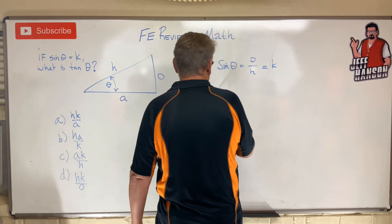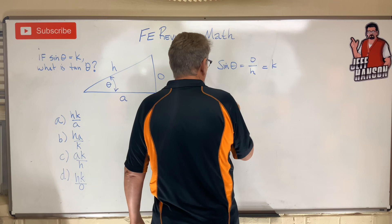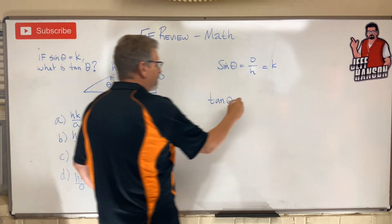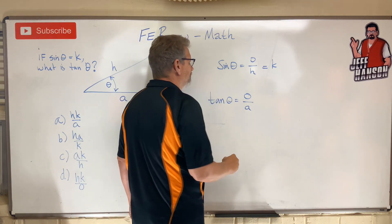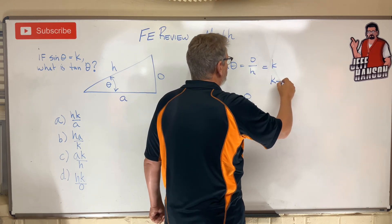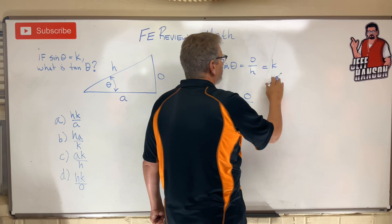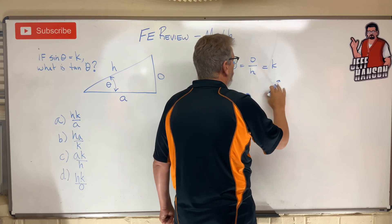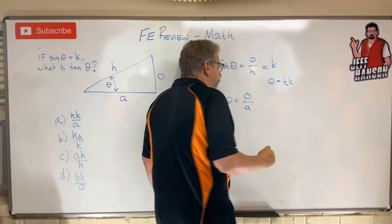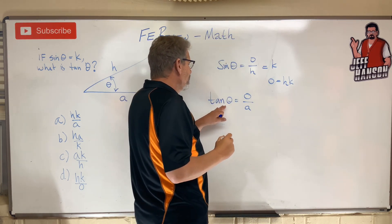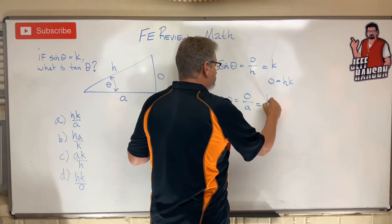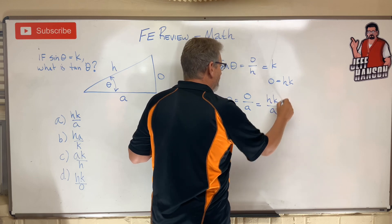So what is tan theta equal to? Well, tan theta is equal to opposite over adjacent, right? O over A. I've got an O up here, so O must be equal to h times k. So tan theta — let's just substitute that in — tan theta must be equal to h times k divided by a.